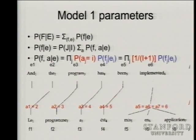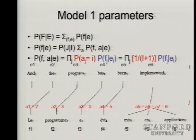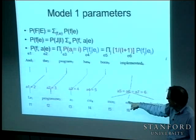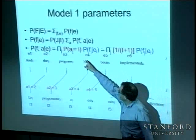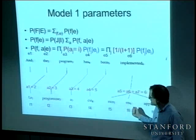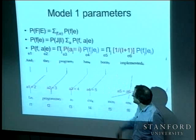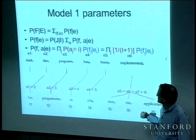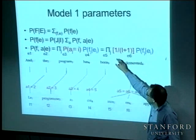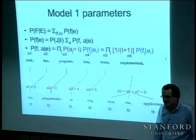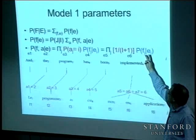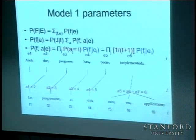Once we've decided the length of the French sentence, we take these positions and say there's a probability distribution over this position being aligned to any English word, including the possibility of it being aligned to no English word — the null. We have a probability of A_j equals I, and then given a certain alignment, we have the probability of F_j given E_I. In model one, the alignment probabilities are just taken to be uniform, so there's no real content in them.